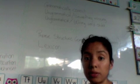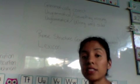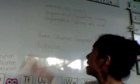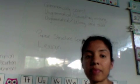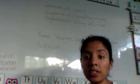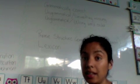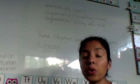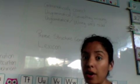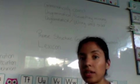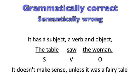We have some examples. Some sentences are grammatically correct. They have the typical word order, but they are semantically at least questionable. We will call this semantically odd. This sentence is grammatically correct, but semantically wrong. It has a subject, a verb, and an object. But it doesn't make sense unless it was a fairy tale.